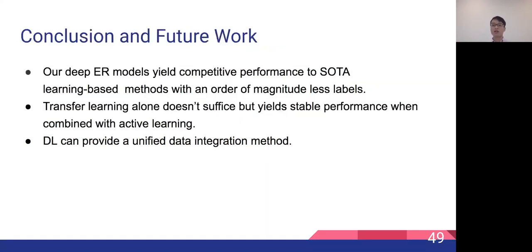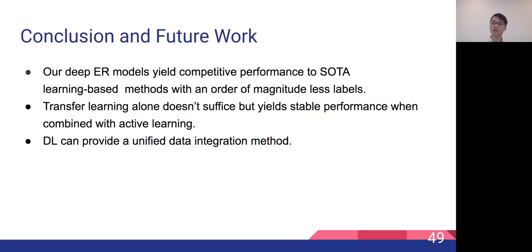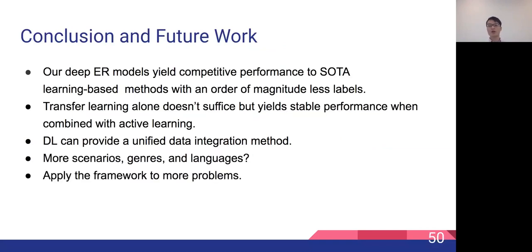In conclusion, our deep entity resolution model yields competitive performance to state-of-the-art while using an order of magnitude fewer labels. Transfer learning alone doesn't suffice to construct a reliable entity resolution system, but when combined with active learning, we get stable and high performance. This work provides further support for the claim that deep learning can provide a unified integration method even in low-resource settings without the need for feature engineering for every single ER scenario. For future work, we are interested in applying our methods to more complicated scenarios, genres, and non-English languages, and also applying the transfer and active learning frameworks to problems beyond entity resolution.